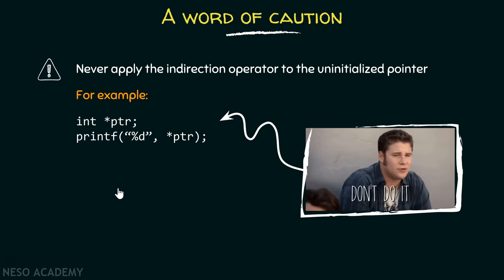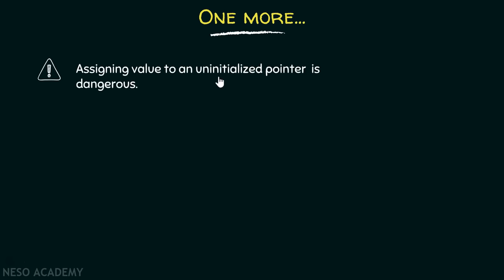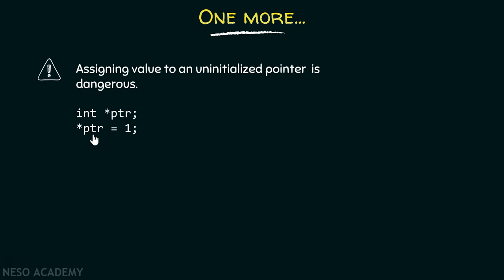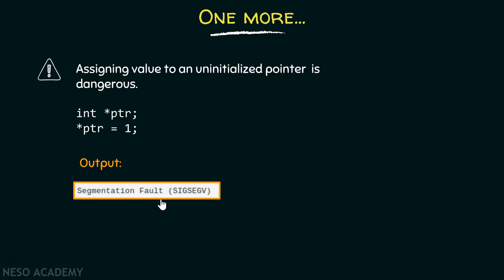If we do this, we will observe some undefined behavior. Additionally, assigning a value to an uninitialized pointer is dangerous. Here the pointer is uninitialized, we apply the dereference operator, and we also try to assign a value to the object pointed by this pointer — but this pointer is not pointing to any location. It is important to first initialize the pointer before accessing or writing to the location it points to. This will produce a segmentation fault error.